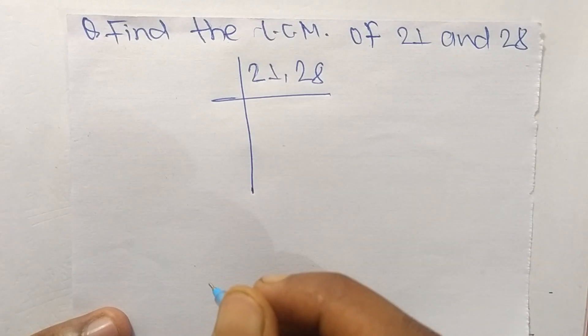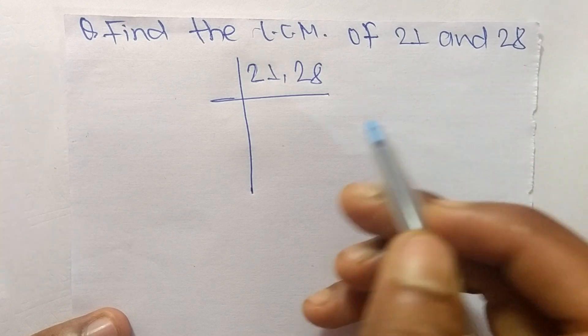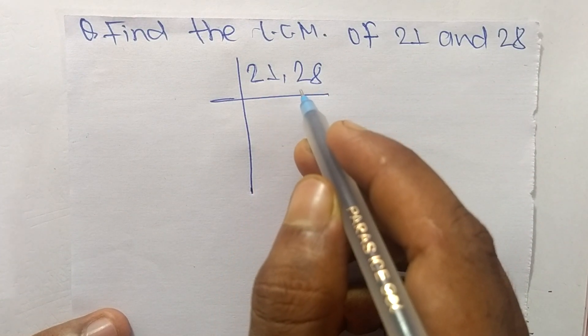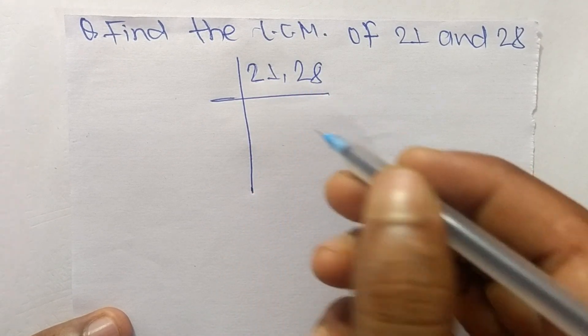Today in this video we shall learn to find the LCM of 21 and 28. To find LCM, we choose the lowest number which can exactly divide 21 and 28.